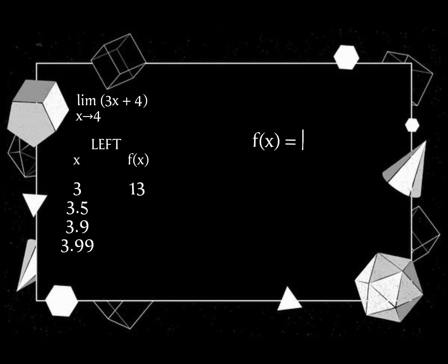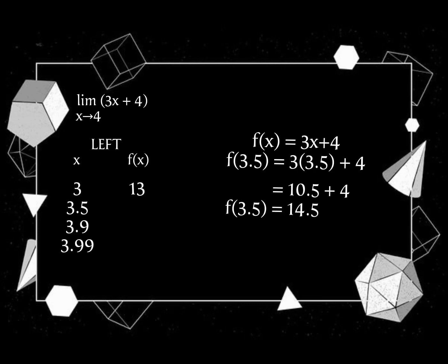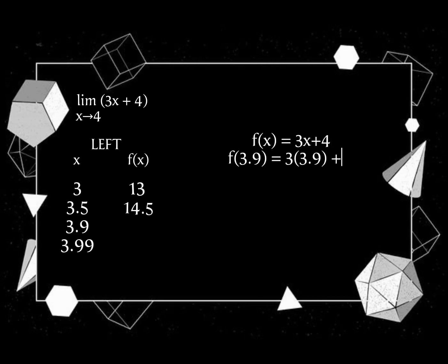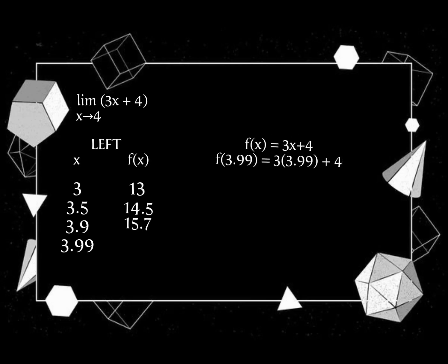We will do the same thing with 3.5. Substitute the values of x: f of 3.5 is equal to 3 times 3.5 plus 4. 3 times 3.5 equals 10.5, then plus 4 equals 14.5. Again, substitute: f of 3.9 is equal to 3 times 3.9 plus 4. 3 times 3.9 equals 11.7, plus 4: f of 3.9 is equal to 15.7. For the last, substitute: f of 3.99 is equal to 3 times 3.99 plus 4, which equals 11.97 plus 4. f of 3.99 is equal to 15.97.